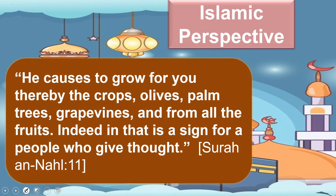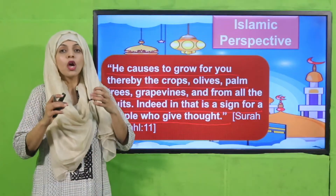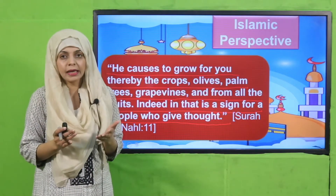From the Islamic perspective: 'He causes to grow for you thereby the crops, olives, palm trees, grapevines, and from all the fruits. Indeed in that is a sign for the people who give thought.' Allah Ta'ala, in the Quran, tells us that He has created countless types of trees, plants, fruits, and vegetables for us.